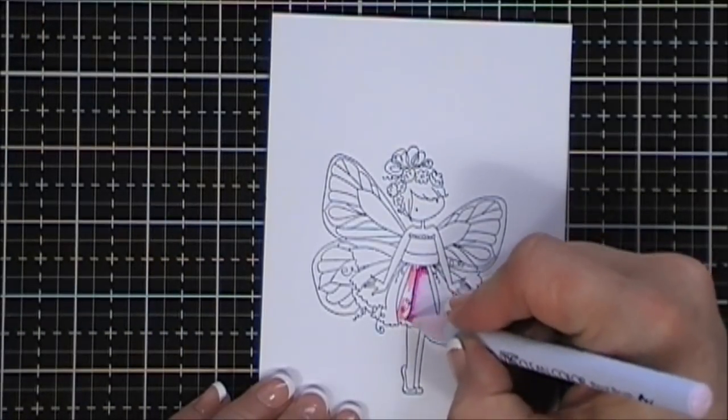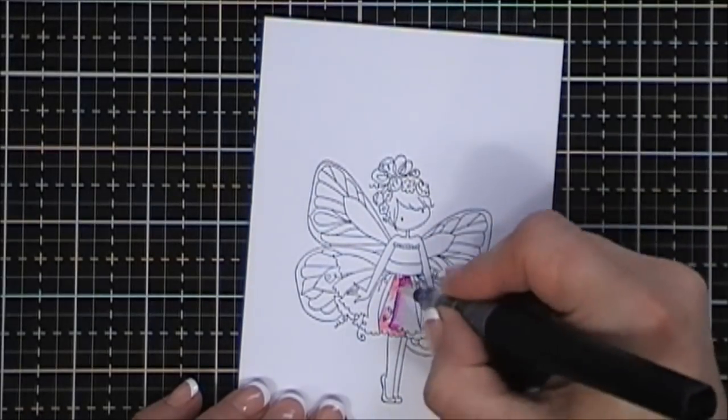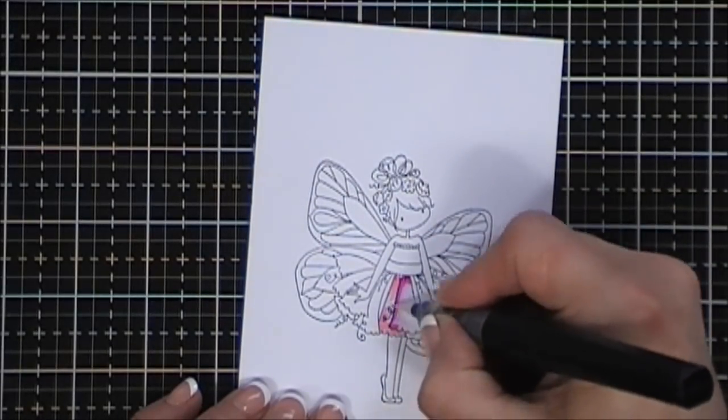Her dress has little panels on it, so I'm alternating the colors with the light and the dark and just using my sparkle pen to blend it out.